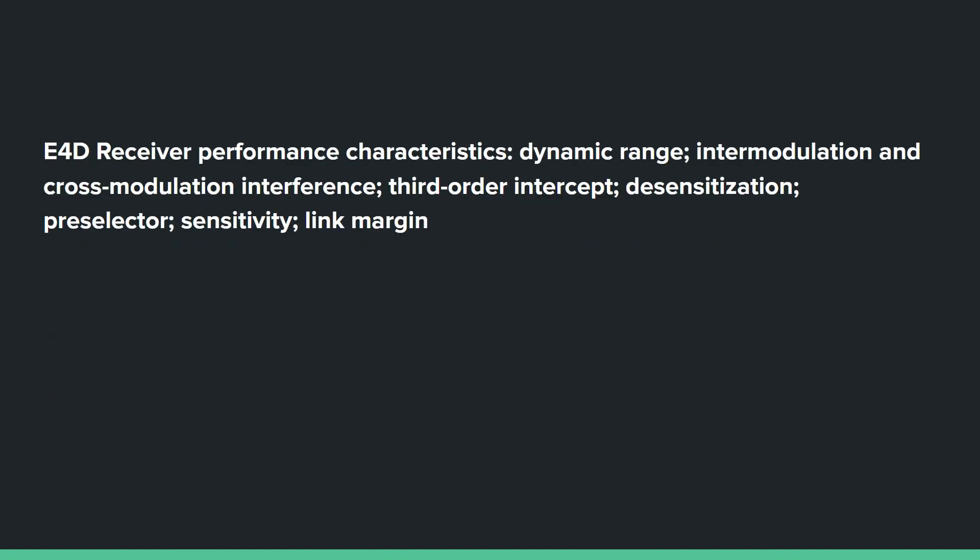E4D covers receiver performance characteristics: dynamic range, intermodulation and cross-modulation interference, third-order intercept, desensitization, preselector, sensitivity, and link margin.